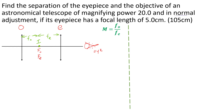We know that the telescope is working in normal adjustment. When a telescope is in normal adjustment, the final image is at infinity. So if the final image is at infinity, we use the formula: magnification equals F-naught over Fe, where F-naught is the focal length of the objective lens and Fe is the focal length of the eyepiece.